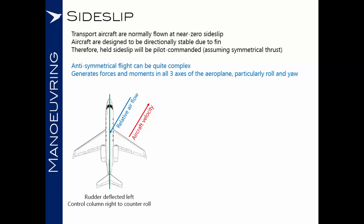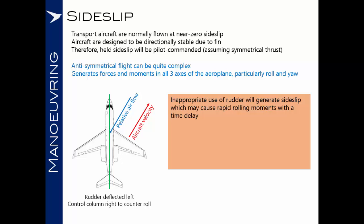Sideslip is the situation where the relative airflow no longer approaches the aircraft from a head-on perspective — instead it's canted off to one side. The rudder is deflected to one side and the control column to the other to counter the roll tendency. An inappropriate use of the rudder will generate a sideslip, which could cause a rapid rolling moment with a time delay in its onset. This time delay coupled with the rate of roll may startle pilots and induce an over-controlling situation.